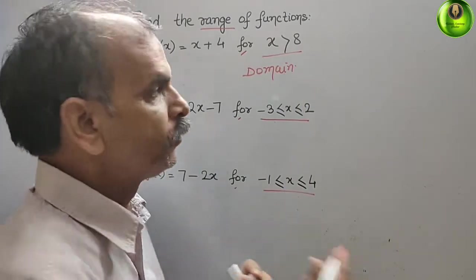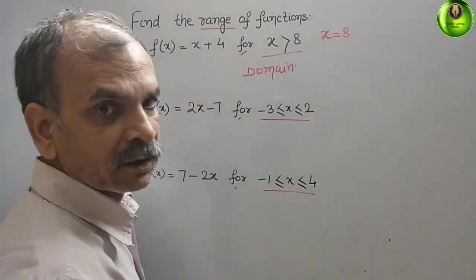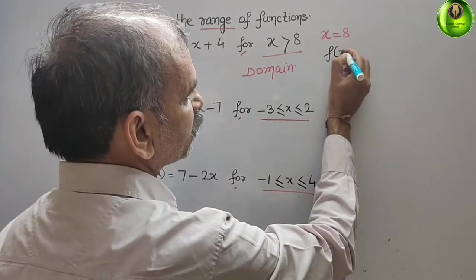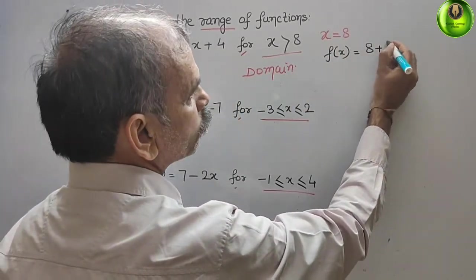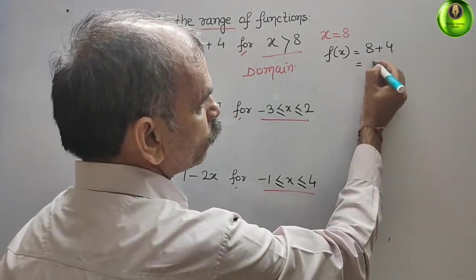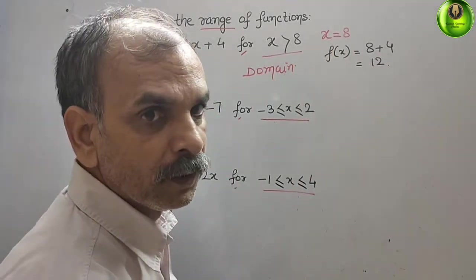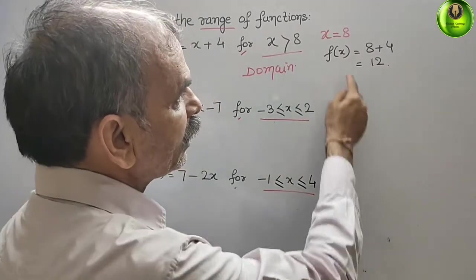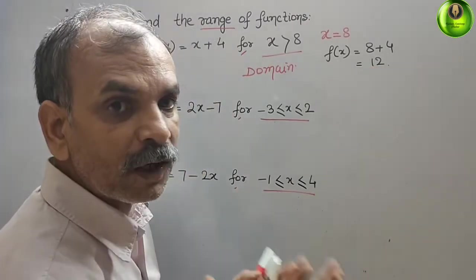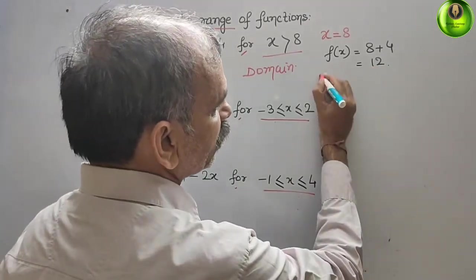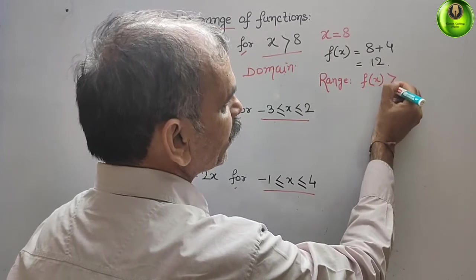We take x = 8 and substitute this value into f(x). So f(x) = 8 + 4, which is equal to 12. That means if you take x = 8, f(x) = 12. Since x must be greater than 8 and x is positive, the value will be greater than 12 only. Therefore, the range is f(x) greater than 12.